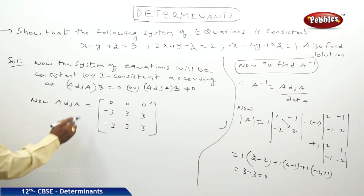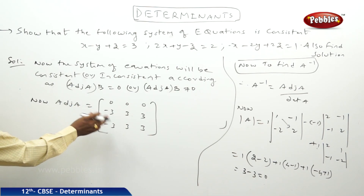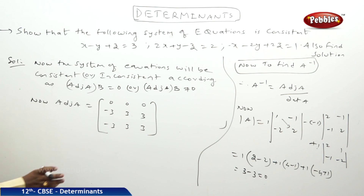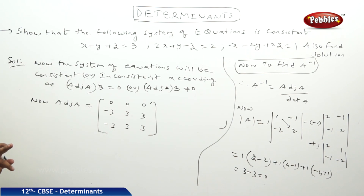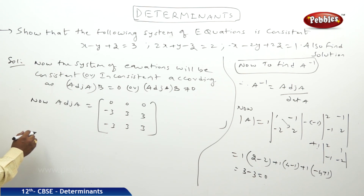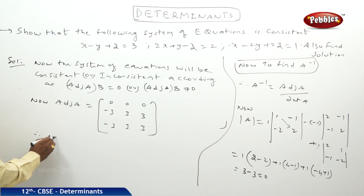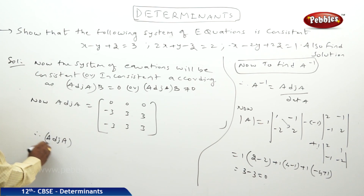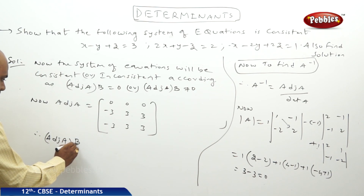The adjoint of A I found out — adjoint of A means it is a matrix obtained by finding the transpose of the cofactor matrix. Therefore I will be finding out adjoint A into B.